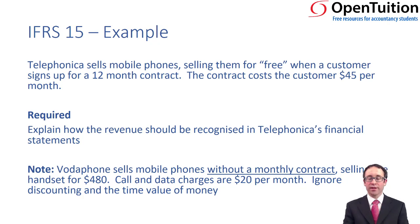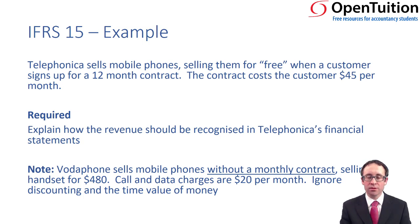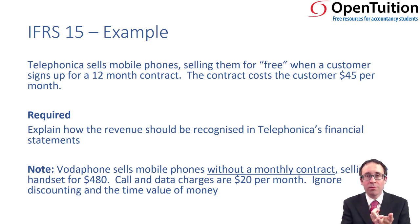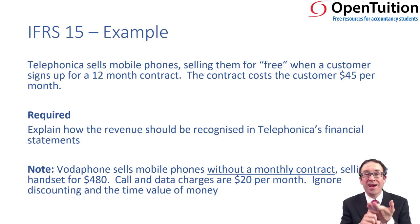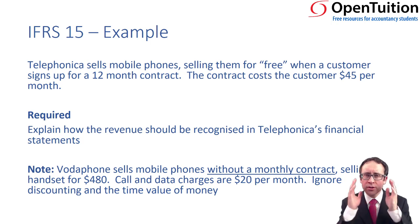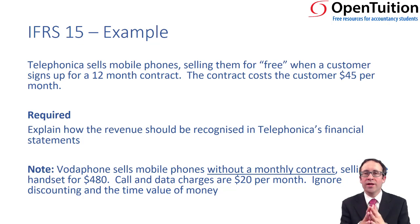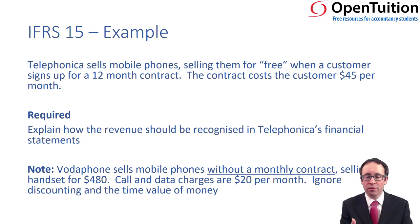Let's look at the Telefonica example, which asks us to explain how revenue should be recognized in Telefonica's financial statements. The explanation takes us through the five separate steps: identifying the contract, looking at the performance obligations, the transaction price, allocating the transaction price, and then the recognition. I'm not going to focus on the debits and credits just yet — I just want to focus on recognizing goods at a point in time and services over a period of time.